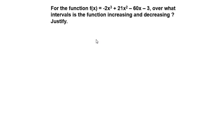This is our first homework assignment for week 13 in calculus. The problem is: for the function f(x) = -2x³ + 21x² - 60x - 3, over what intervals is the function increasing and decreasing? Justify.